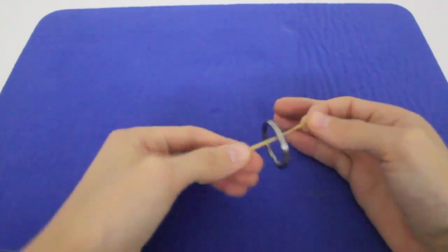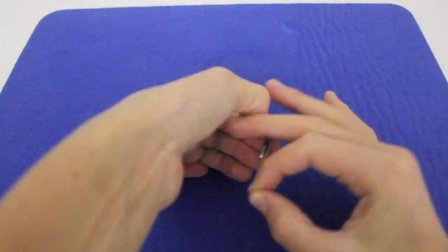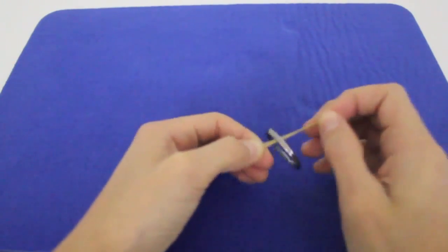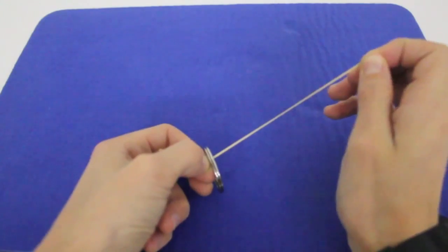And what you're going to do is pinch the side where you've got the extra rubber band and just pull like this so it's really tight.